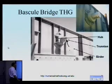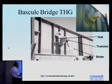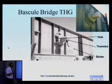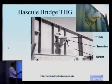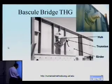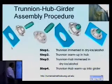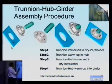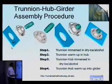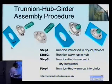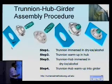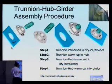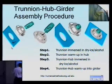You take the trunnion — a separate hollow steel shaft — and put it into a cooling medium such as dry ice in alcohol or liquid nitrogen. Once it cools down, the diameter contracts, and you put it into the hub, completing the first stage of assembly. Then, to fit the trunnion-hub assembly into the girder, you cool the combined trunnion-hub assembly again in liquid nitrogen or dry ice alcohol mixture, so the hub fits into the girder, resulting in the full trunnion hub girder assembly.